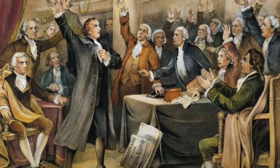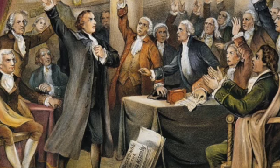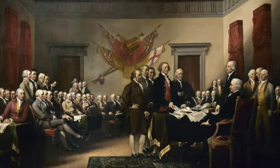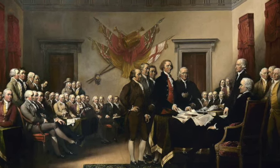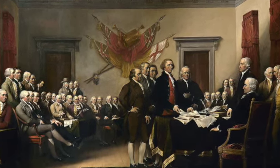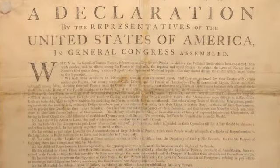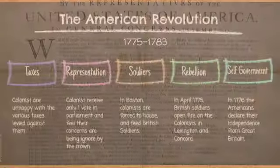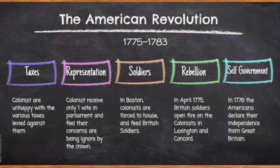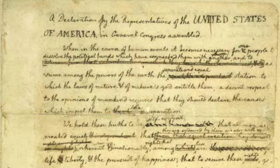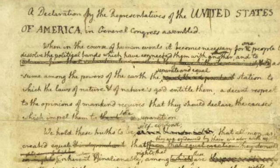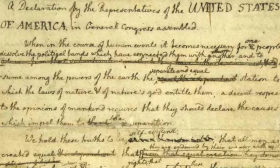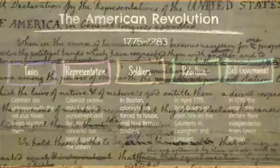The Second Continental Congress debated what to do. In the spring of 1776, Virginia introduced a resolution for independence from Great Britain. After heated debate, on July 2nd, 1776, the measure was voted on and adopted on July 4th, 1776, and the colonists declared their independence from Great Britain. Thomas Jefferson wrote in the Declaration of Independence that it was the right of the people to overthrow the government if the government did not take care of them. It gave people the right to life, liberty, and the pursuit of happiness — what Jefferson called inalienable rights.